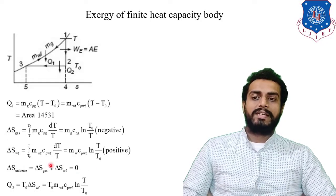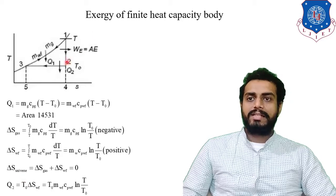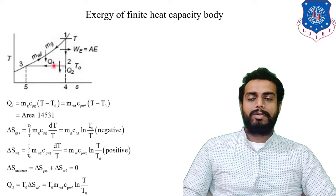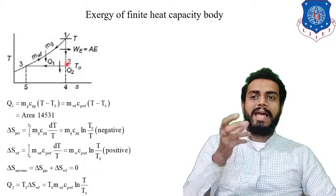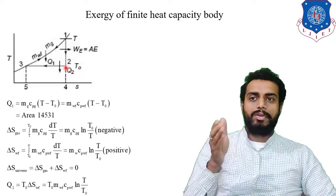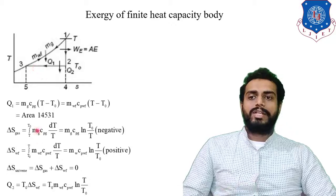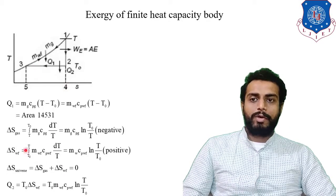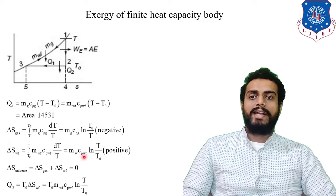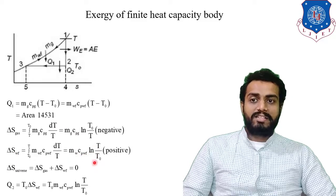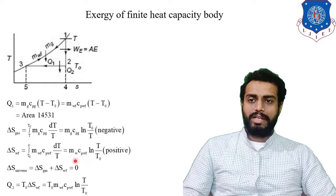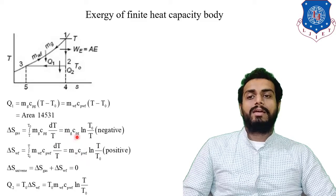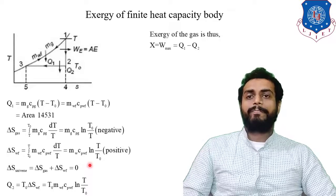Heat rejection can be written as what? Heat rejection is occurring at temperature T0. So that is equal to T0 into Delta S of working fluid. So T0 Delta S of working fluid will be what? Delta S of working fluid you know over here, Mw CpWF ln T by T0. But here instead of Mw CpWF, we can also write Mg CpG ln T by T0.